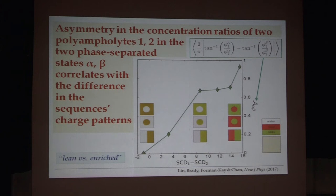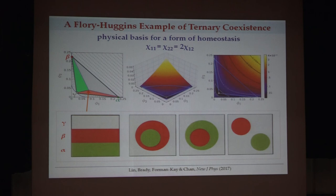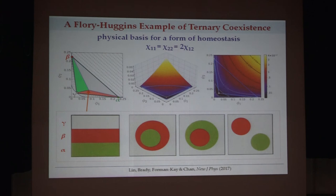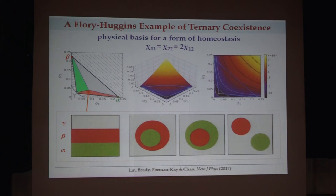We were not able to find a case of ternary coexistence, but when we play around with Flory-Huggins theory with freely adjustable parameters, we can get an example case of ternary coexistence. This is interesting because it's a way to achieve homeostasis — the whole area means that if you start with any point in that area, you phase-separate into three phases with exactly the same composition. The fraction of the system in each state is proportional to the area of the triangle opposite that point.